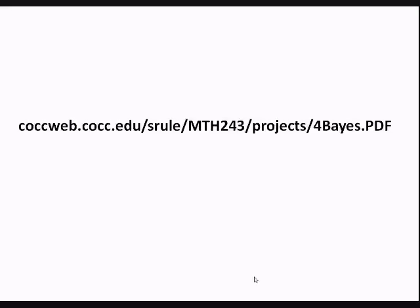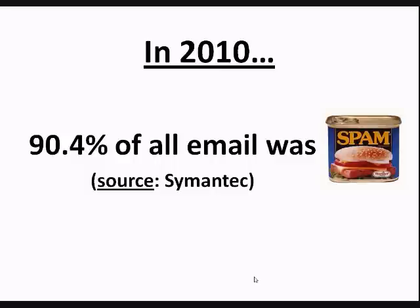We're talking about drug testing and disease testing in the project, but for this video we'll keep it a little more light and talk about spam — specifically spam emails, not spam from a can. Symantec in 2010 said that 90.4% of all email was spam. It's a staggering number — you think about the trillions of emails that go out every year and nine out of ten of them are unwanted ones.